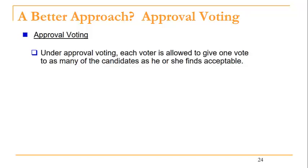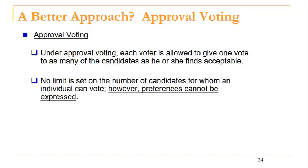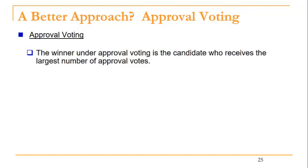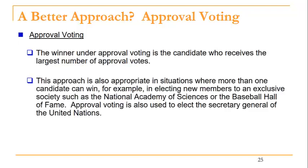There is one final option — perhaps a better approach — called approval voting. Under approval voting, each voter is allowed to give one vote to as many of the candidates as he or she finds acceptable. There's no limit on the number of candidates for whom an individual can vote. However, preferences cannot be expressed; voters show disapproval of a candidate simply by not voting for them. The winner is the candidate who receives the largest number of approval votes.